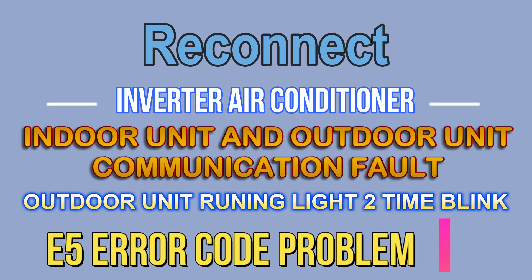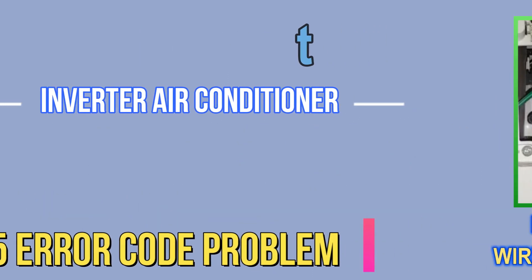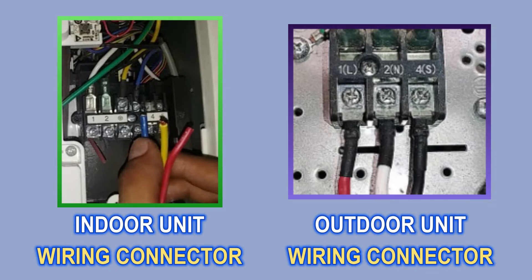This error can occur in your AC due to four reasons. The first reason may be the supply wire going to your indoor unit and outdoor unit. You should look at the connector of the indoor unit and the connector of the outdoor unit — there should be the same color code. If the same color code wire is not installed in the connectors of the indoor unit and the outdoor unit, then you will get this error.